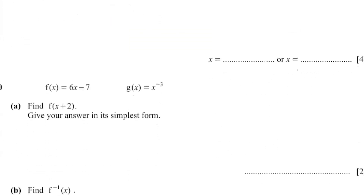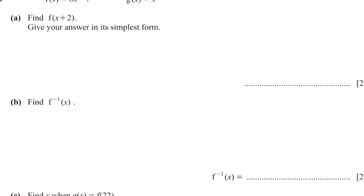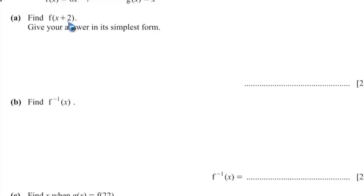This is question 20 of paper 0580/23, May-June 2023. We have f(x) equals 6x minus 7, and g(x) equals x to the power of negative 3. Find f(x plus 2), giving your answer in the simplest form. What you need to do is pass x plus 2 into f(x) — anywhere you see x in f(x), substitute x plus 2.